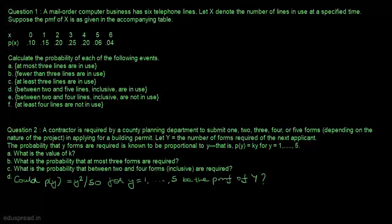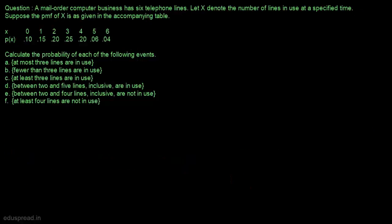In this lecture we will solve these two questions. A mail order computer business has six telephone lines. Let x denote the number of lines in use at a specified time. Suppose the probability mass function of x is as given in the accompanying table. This is the probability mass function of x.